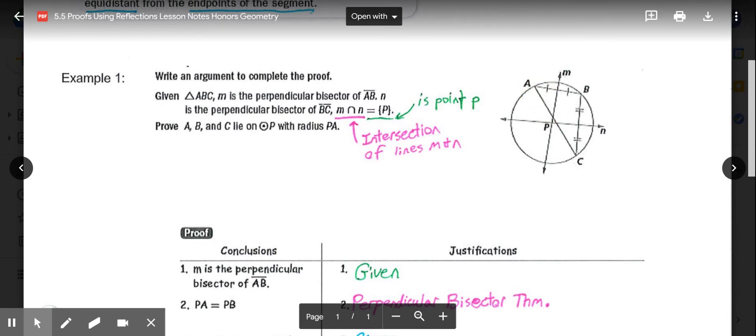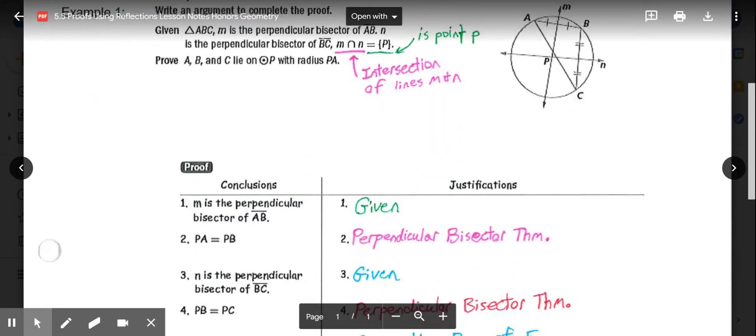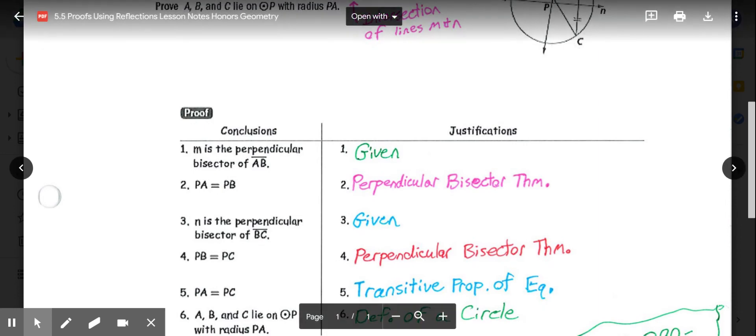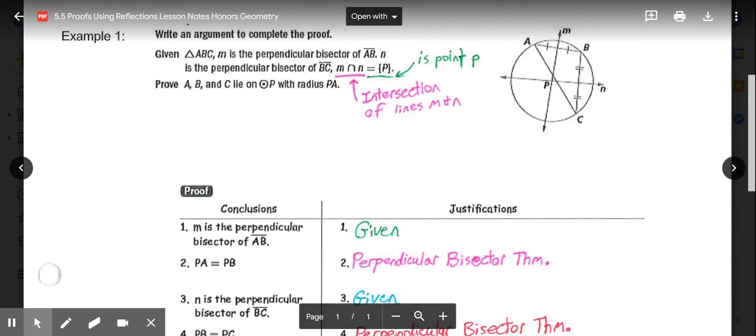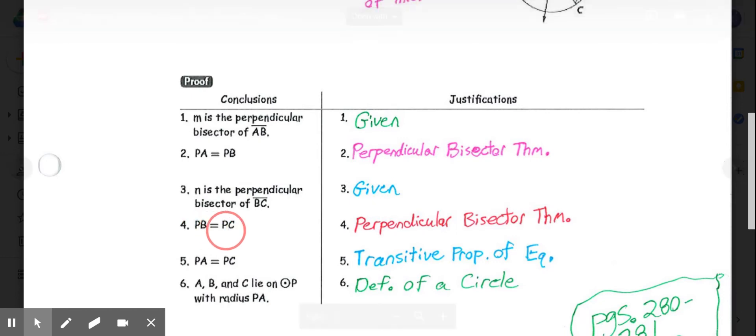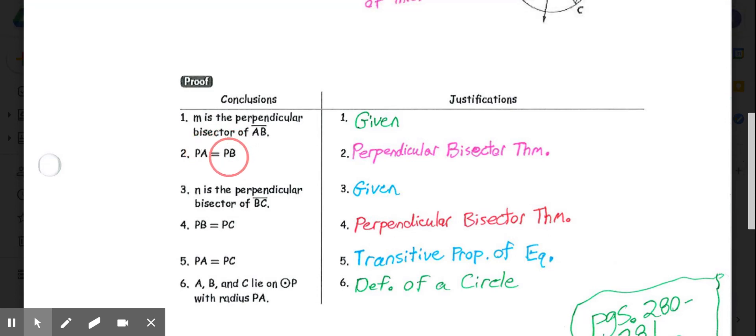Then they said PA is equal to PB. So the distance from P to A equal to the distance P to B. We know that's true because of the perpendicular bisector theorem. Then they stated N is the perpendicular bisector of BC, meaning that PB and PC are equal. Again, by the perpendicular bisector theorem. So now we know PA equals PB and PB equals PC. So we can use that transitive property of equality to say the distance from P to A is equal to the distance from P to C because they both equaled PB.